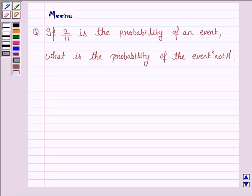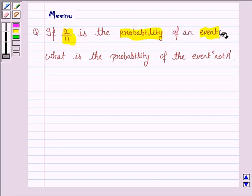Hello and welcome to the session. Let us discuss the following question. It says, if 2 by 11 is the probability of an event, what is the probability of the event not A?